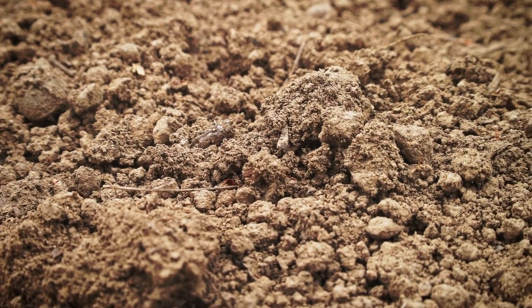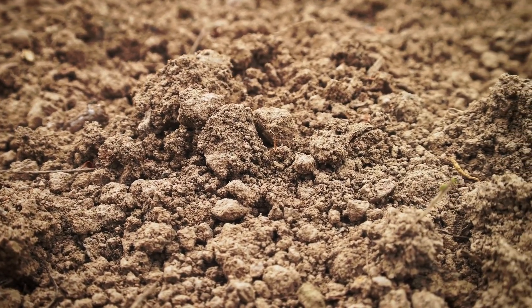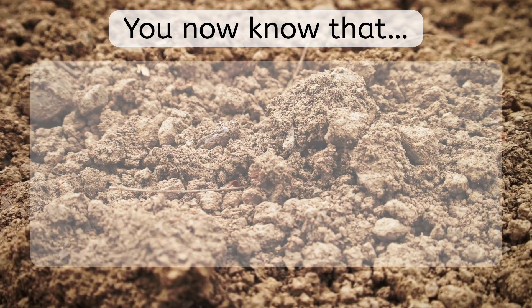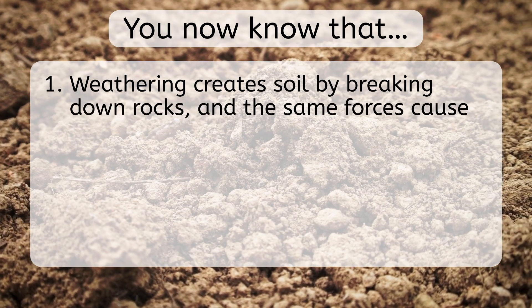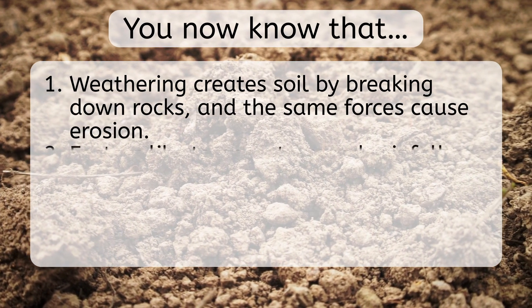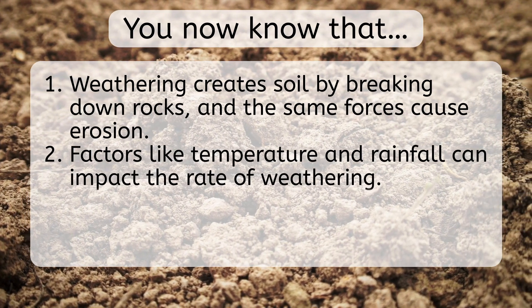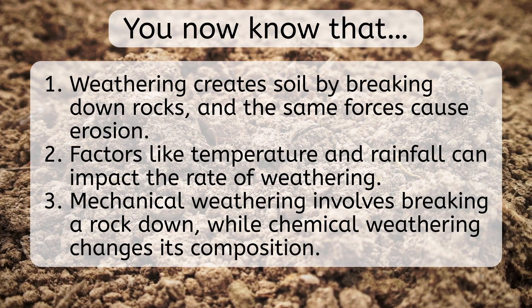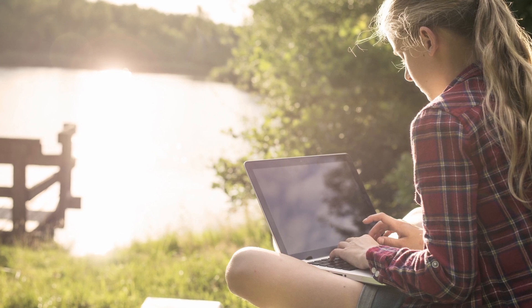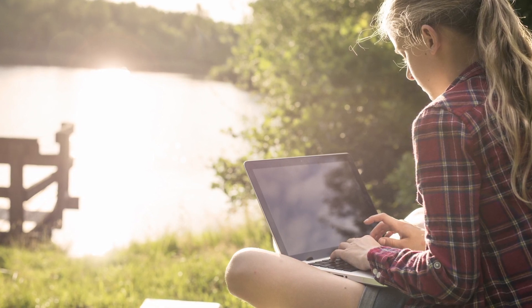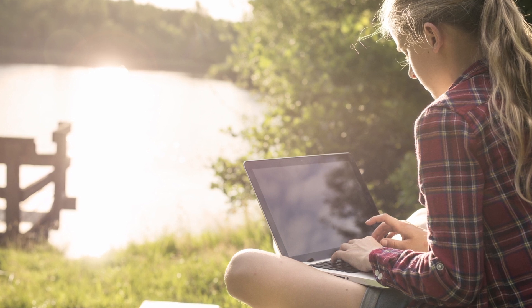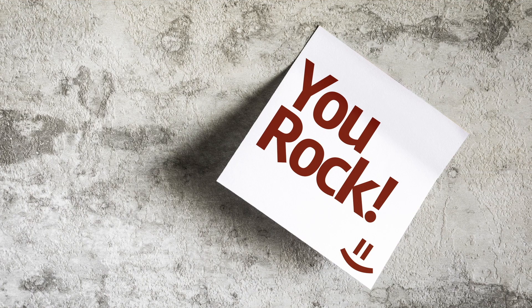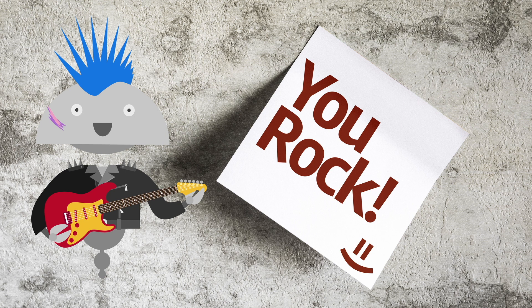There's no doubt soil is essential for life on Earth, and it takes quite a few processes to create this amazing stuff. So let's recap: now you know that weathering creates soil by breaking down rocks, and the same forces cause erosion. Factors like temperature and rainfall can impact the rate of weathering. And mechanical weathering involves breaking a rock down, while chemical weathering changes its composition. Be sure to check out the engaging games and thought-provoking practice activities to get ready for our next lesson, where we'll learn more about how erosion impacts our planet. And in the meantime, remember — in Earth science, as in life, you rock! See you next time!